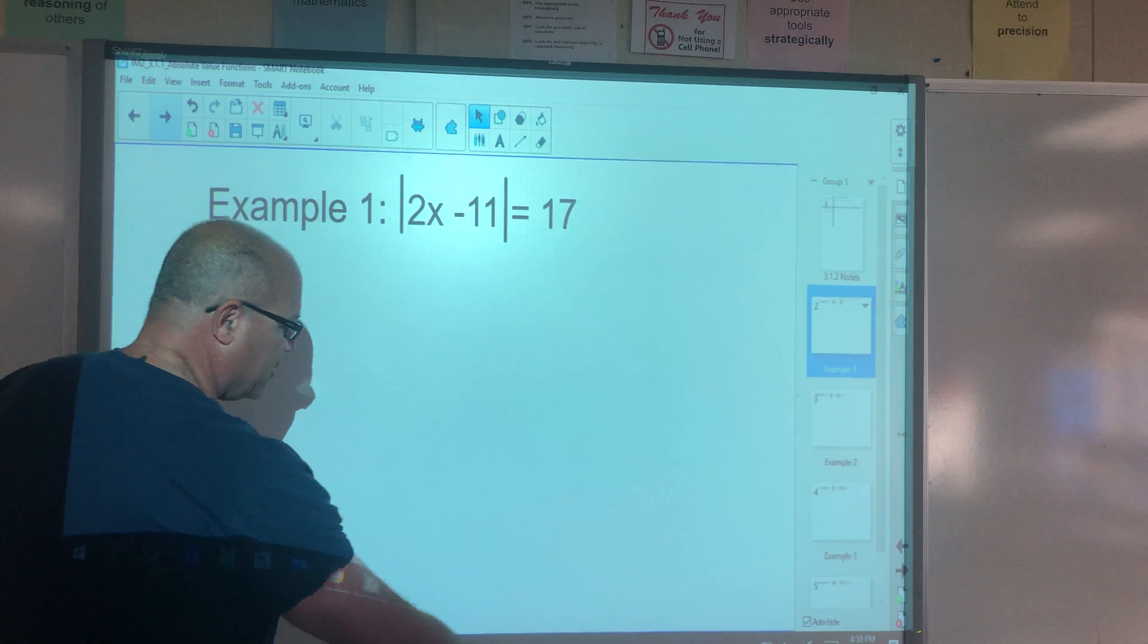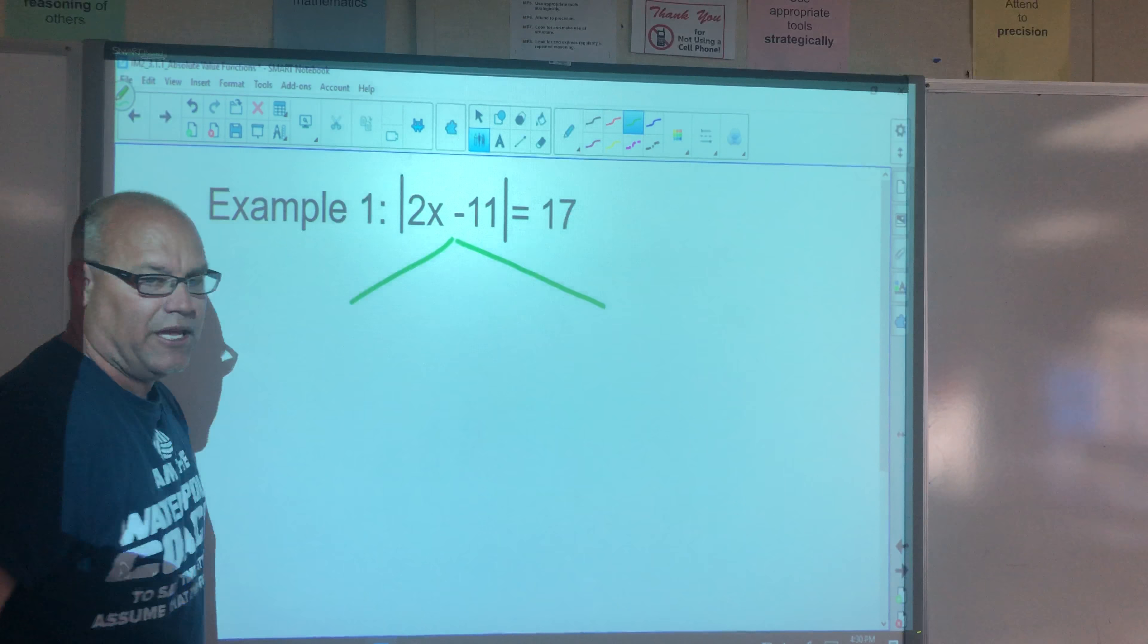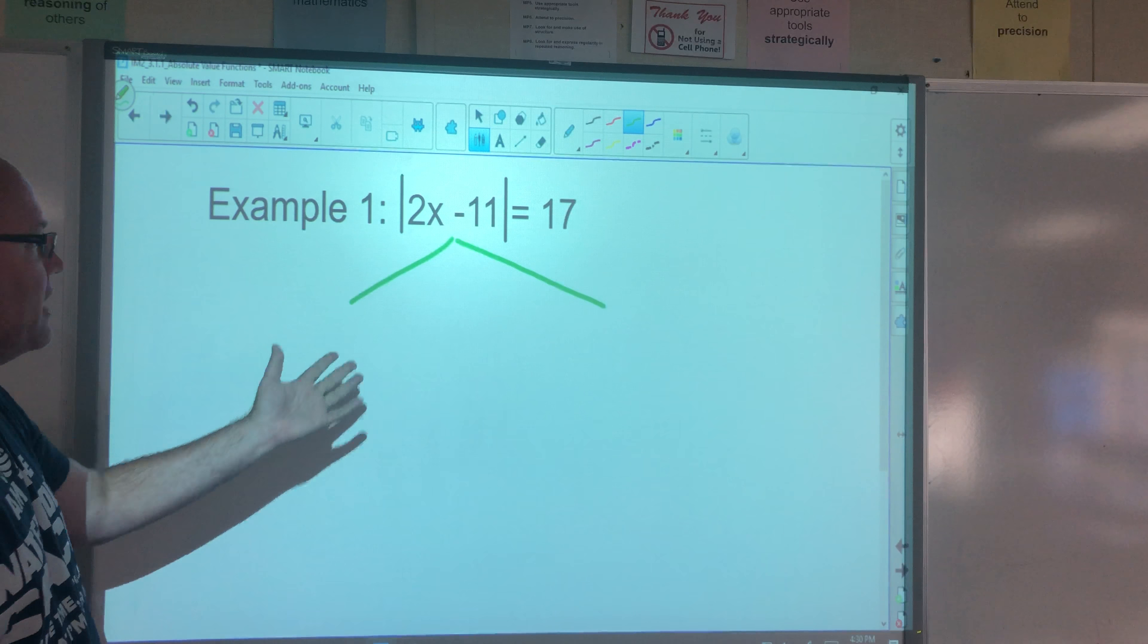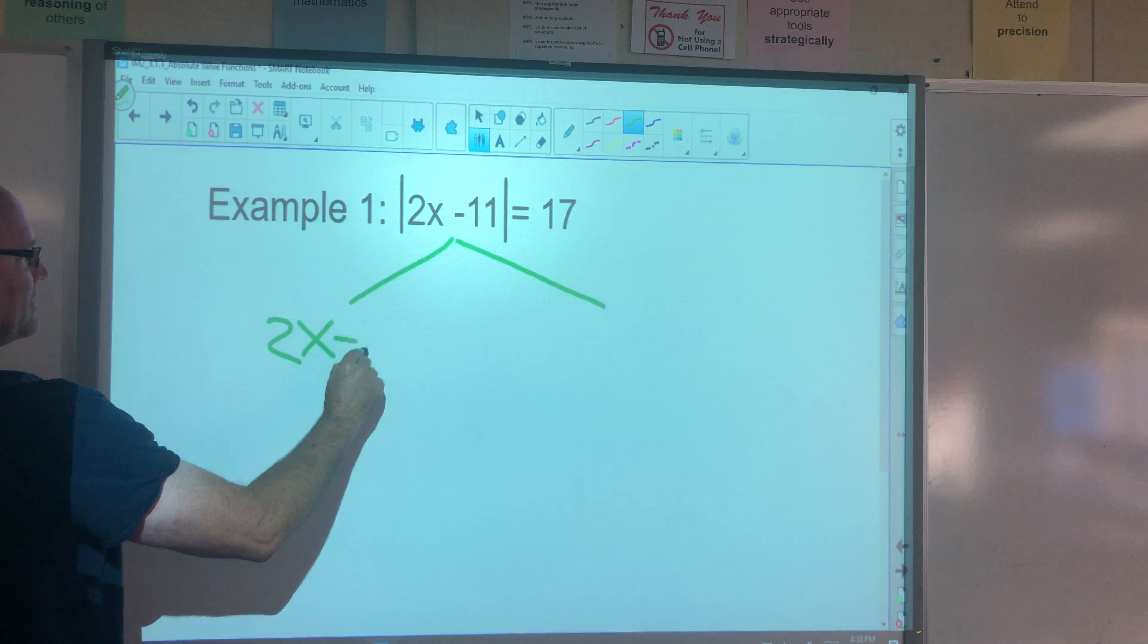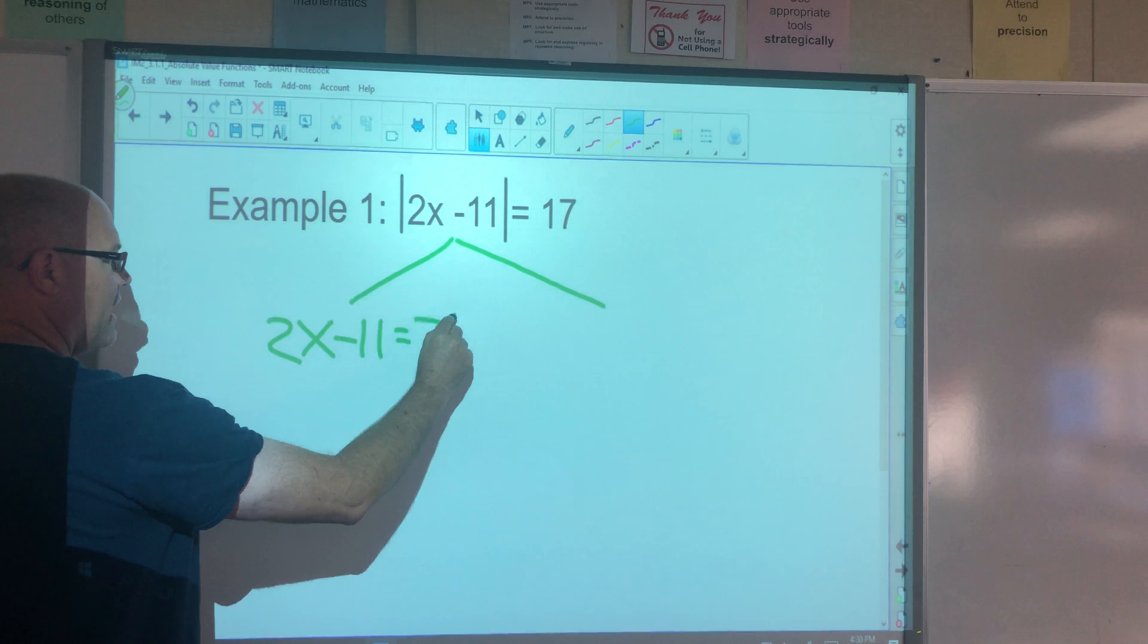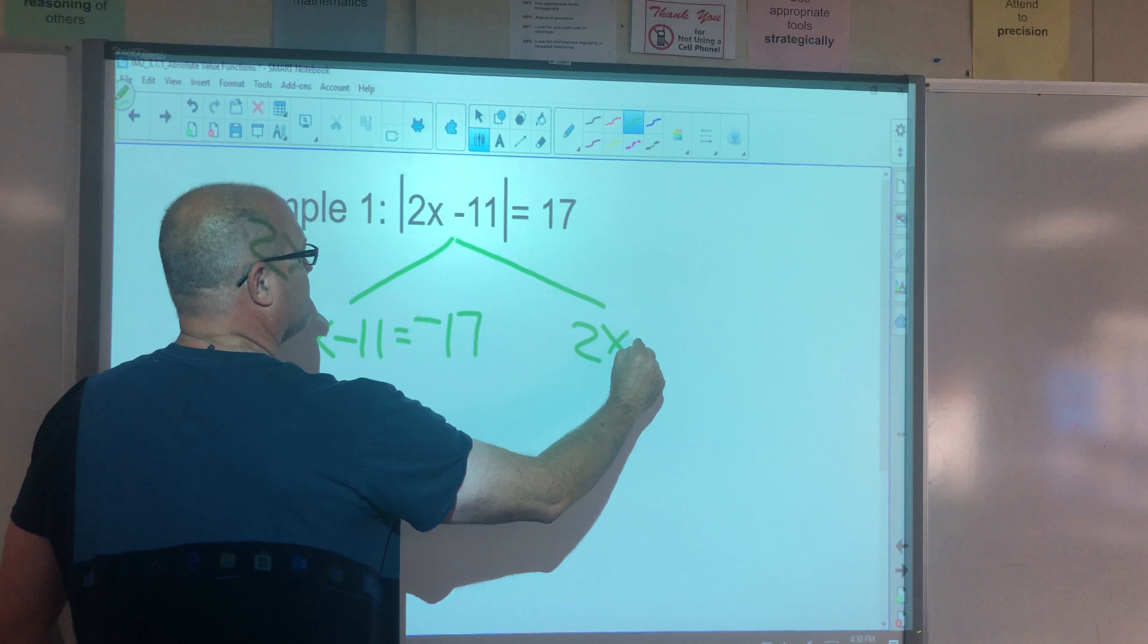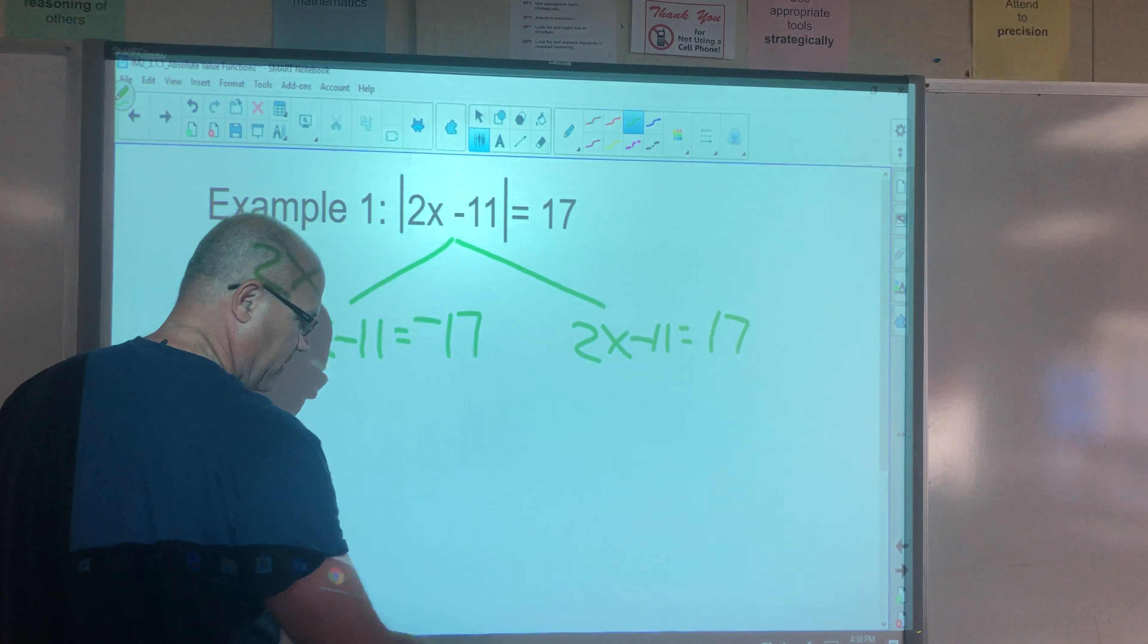So our first step is we're going to rewrite this as two separate equations. One equal to positive 17 and one equal to negative 17 without the absolute value bars. So 2x minus 11 equals negative 17. And 2x minus 11 could also equal positive 17.